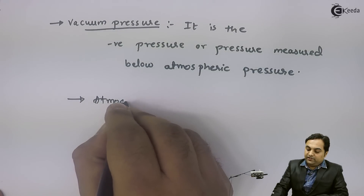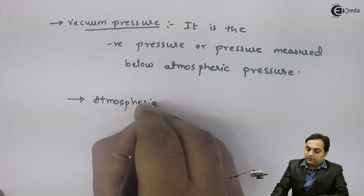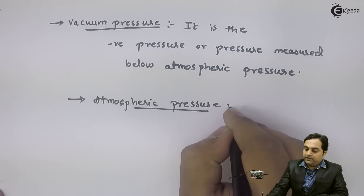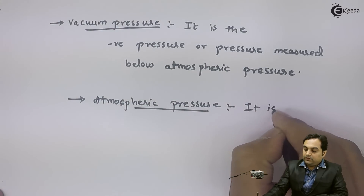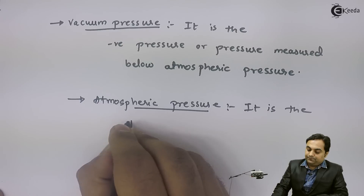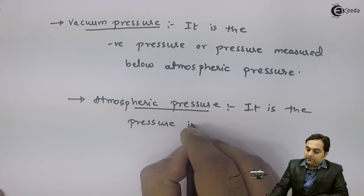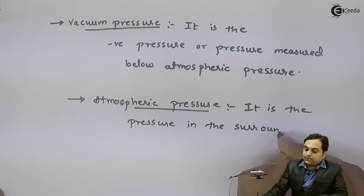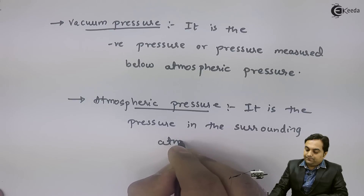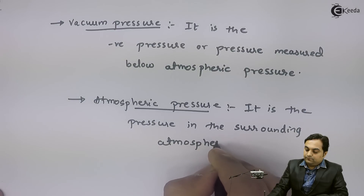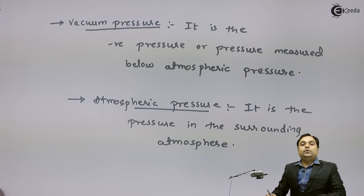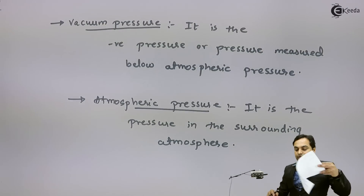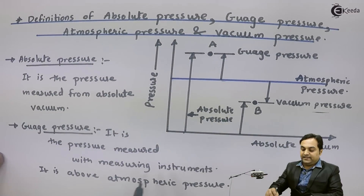Lastly, we have atmospheric pressure. This is very simple — it is the pressure in the surrounding atmosphere, or we can say the pressure exerted by the air on the surroundings.